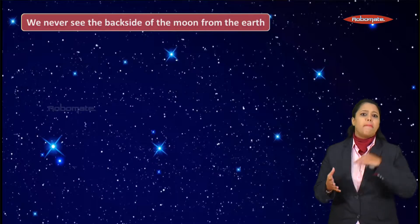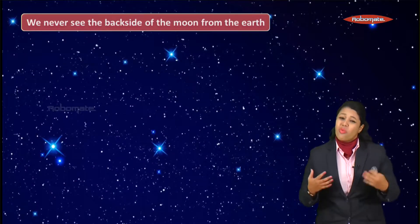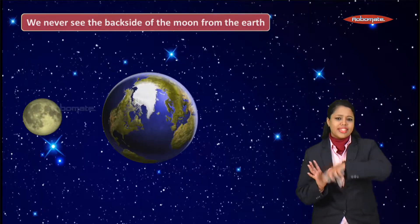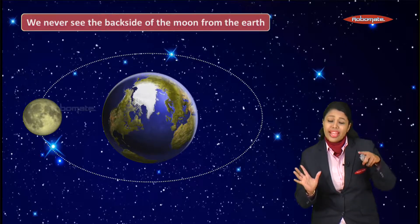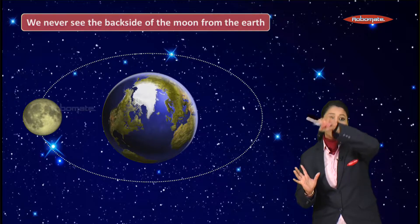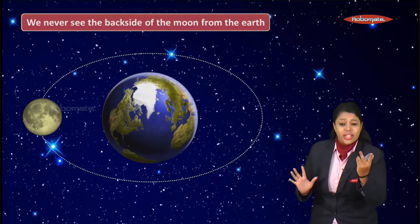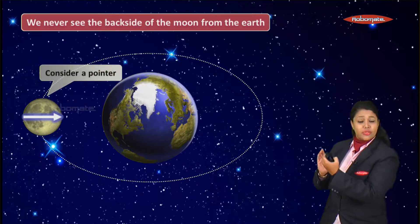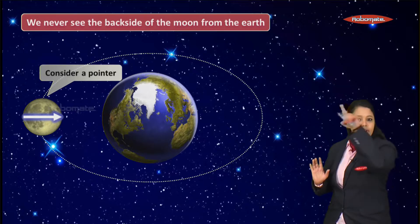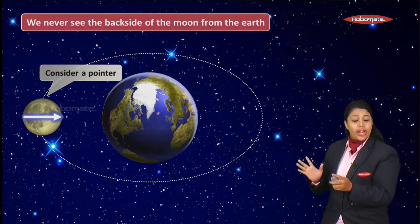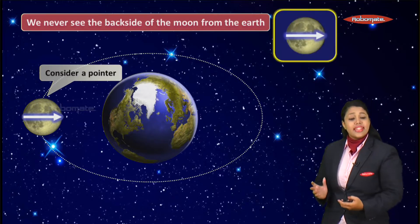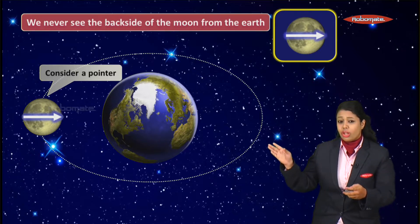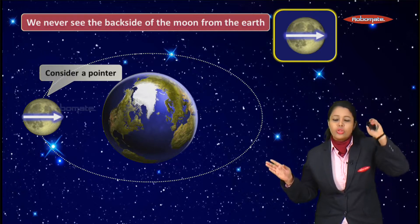Now let's understand why we never see the back side of the Moon. Consider the Earth and Moon's orbit. As the Moon revolves around the Earth, it also rotates around itself. If we place a pointer on the Moon with the arrowhead facing Earth — as the Moon revolves, the arrowhead always points toward the Earth. That is why we can only see one side of the Moon.